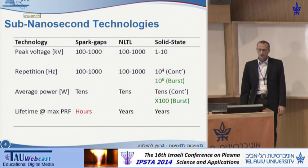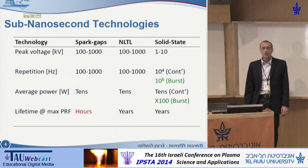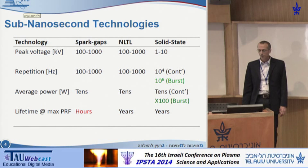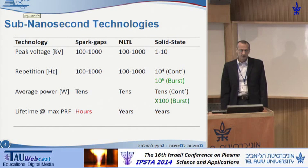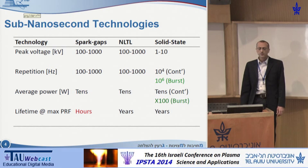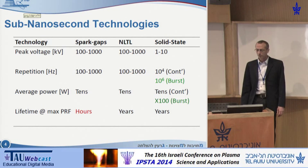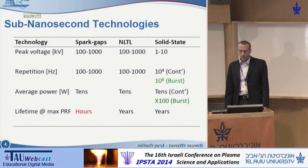There are several technologies to reach sub-nanosecond pulses. In the 100 kilovolt range, you can use spark gaps and nonlinear transmission lines. Solid state can reach a few kilovolts per device but can go to hundreds of kilovolts in a stack. The repetition rate in spark gaps is typically hundreds of hertz, and nonlinear transmission lines are also typically hundreds of hertz, but recent work at Texas Tech University reached 65 megahertz in burst mode.